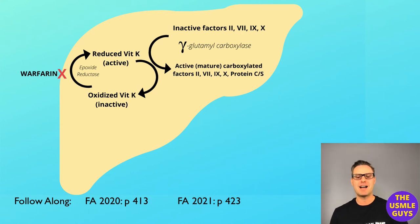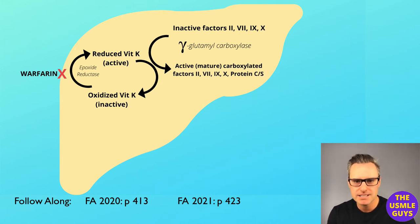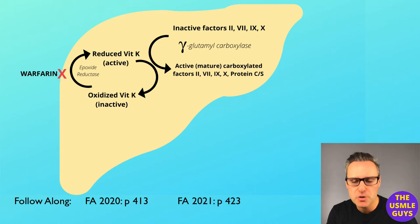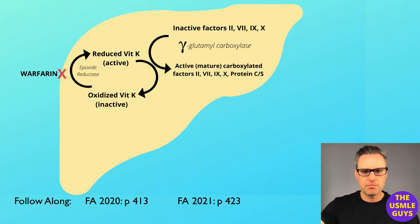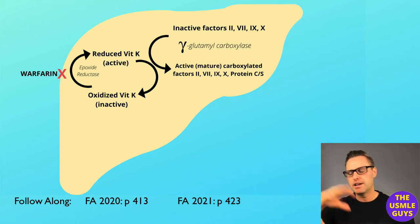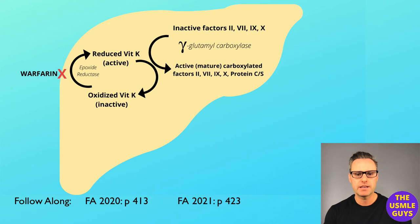Let's move on to some high-yield important hematology and oncology-related pathology with another question — a matching exercise. Take some time, pause the video, and try to match the RBC morphology with its associated pathology. This is super high-yield — you have to be able to quickly answer what deficiency causes which type of red blood cell. Come back when you are ready to discuss the RBC morphologies and their associated pathology.